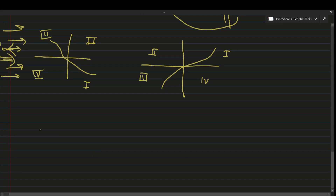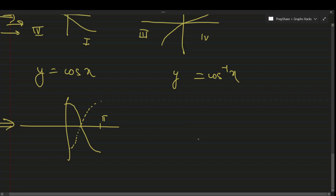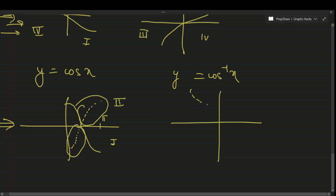Let's take another example: y = cos x and draw y = cos⁻¹x. First draw cos x on [0, π]. Step one: take reflection about the x-axis — that gives a flipped cosine. Step two: view the graph from the side. The part in the first quadrant gets drawn in the first quadrant of the new view, and the part in the second quadrant gets drawn in the new second quadrant, giving the graph of cos⁻¹x.